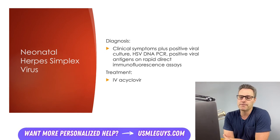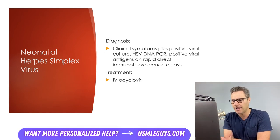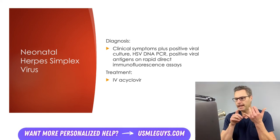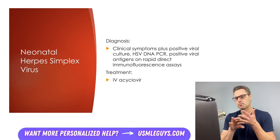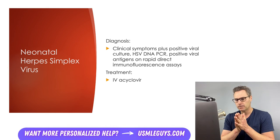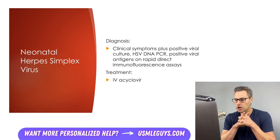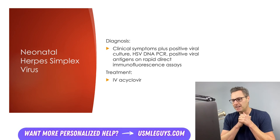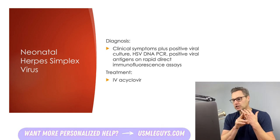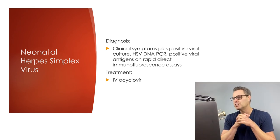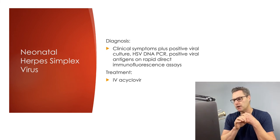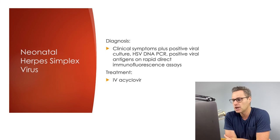Diagnosis is slightly different for each type. In skin-eye-mouth disease: any of the symptoms discussed without CNS or end organ involvement, plus isolation of HSV in surface cultures, positive HSV DNA PCR in blood or plasma, or HSV in skin lesion scrapings by rapid direct immunofluorescent assays. In CNS disease: positive CSF HSV DNA PCR, or clinical symptoms of CNS involvement plus isolation of HSV in surface cultures or positive HSV DNA PCR in blood or plasma. In disseminated disease: clinical signs of systemic involvement plus any of those lab findings, including positive CSF HSV DNA PCR.